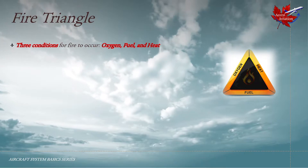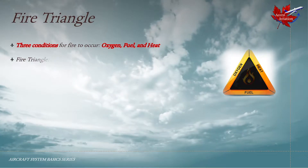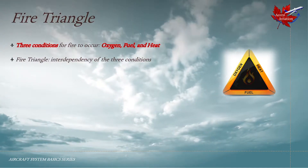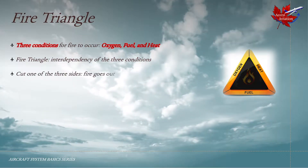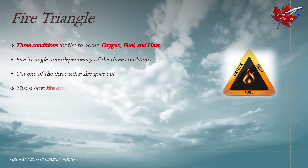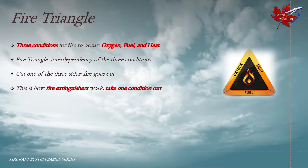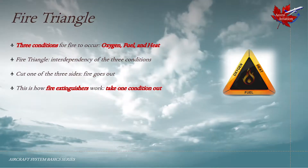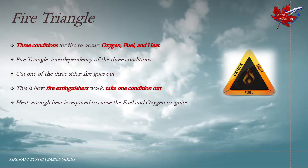For a fire to occur there have to be three conditions: oxygen, fuel, and heat. A fire triangle illustrates the interdependency of these three conditions, as can be seen in this graphic. If we are to cut off one of the three sides of the triangle, the fire would go out. This is how fire extinguishers work — essentially we take off one of the elements of oxygen, heat, or fuel from the equation, thereby extinguishing the fire.